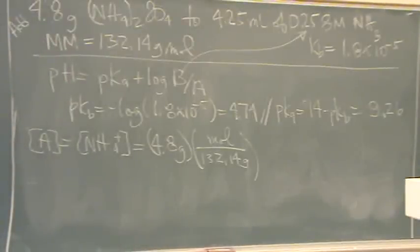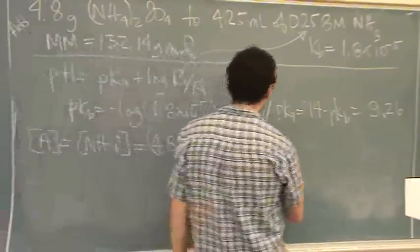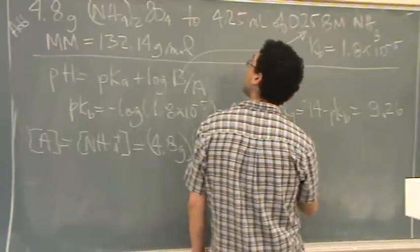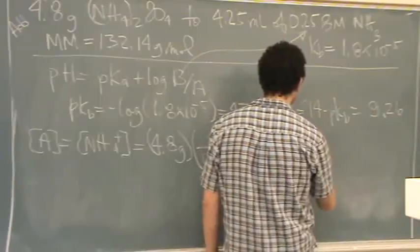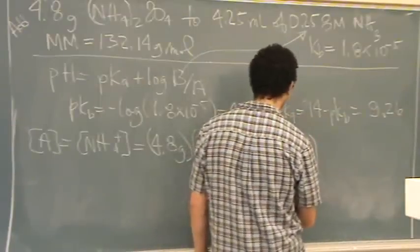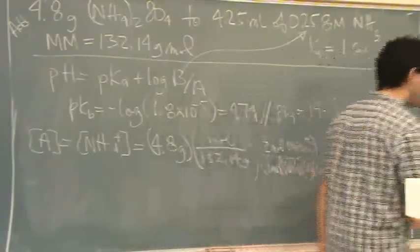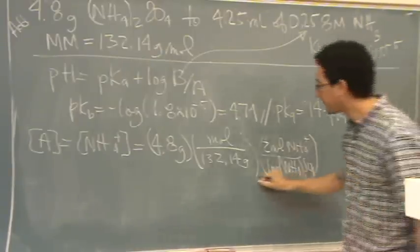And then now that's moles of the whole complex. But I need moles of NH4 plus. So I've got two moles of NH4 plus for every one mole of ammonium sulfate. So now I've got moles of NH4 plus. What do I need to do with that?